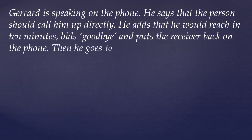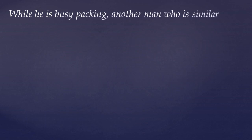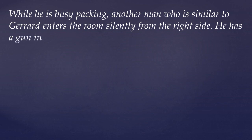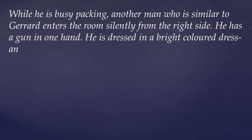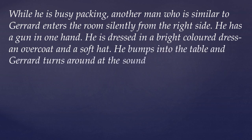Then he goes to the divan and starts packing the stuff in a travelling bag. While he is busy packing, another man who is similar to Gerard enters the room silently from the right side. He has a gun in one hand. He is dressed in a bright coloured dress, an overcoat, and a soft hat. He bumps into the table and Gerard turns around at the sound.